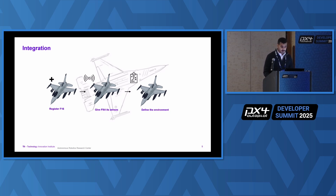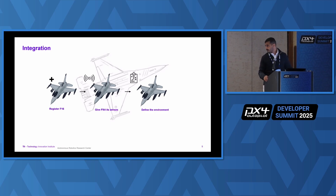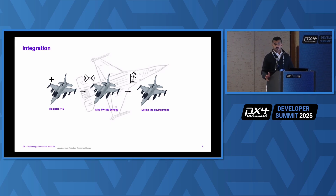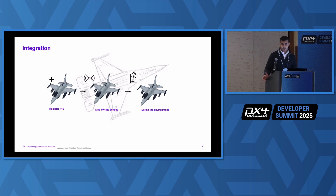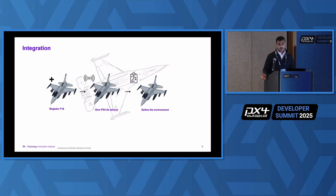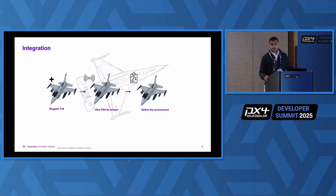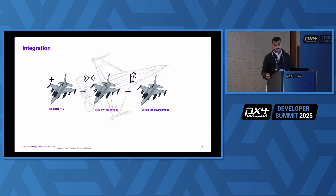After that, I added some sensors to JSBSim, because JSBSim is created for manual flights only — not autonomous flights. PX4 requires some sensors, for example IMU, GPS, and barometer. Otherwise it will trigger warnings and errors, and also not allow arming the vehicle. Next, I defined the environment by creating a simulation configuration file, defining the scenario and its coordinates.